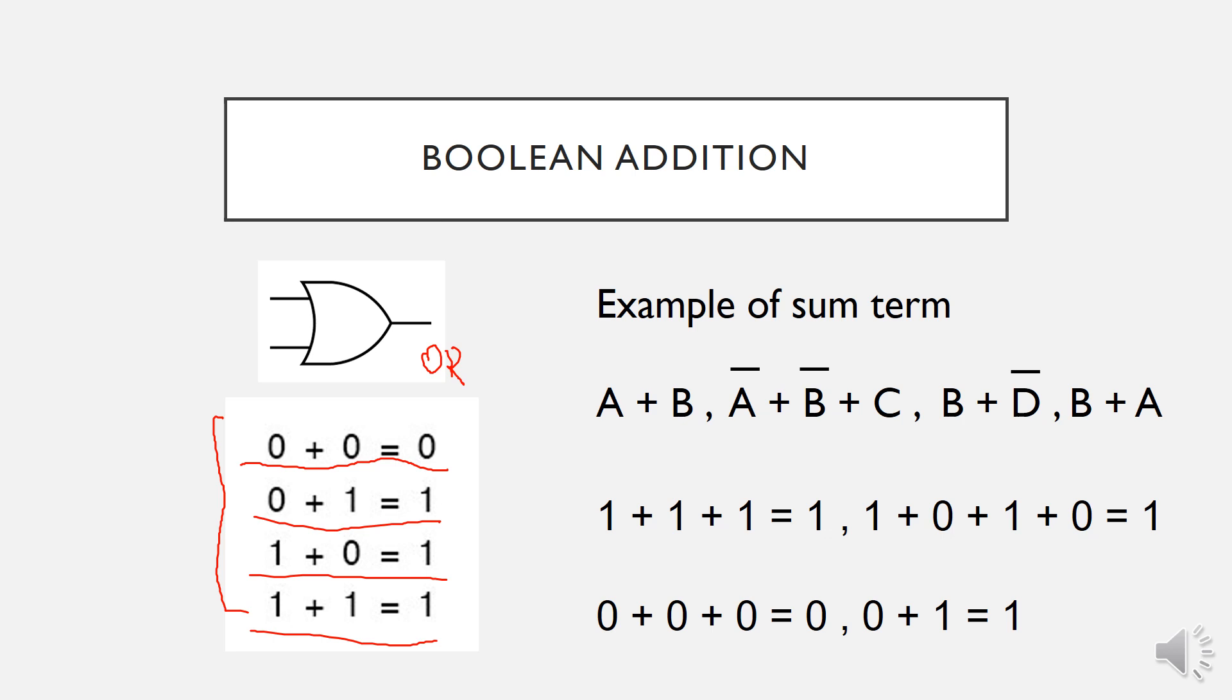Any OR operation without an AND operation involved is called sum term. This term only involves OR operation without AND operation. This one is another sum term with three inputs, another sum term with two variables, and the last one is also sum term with two variables.